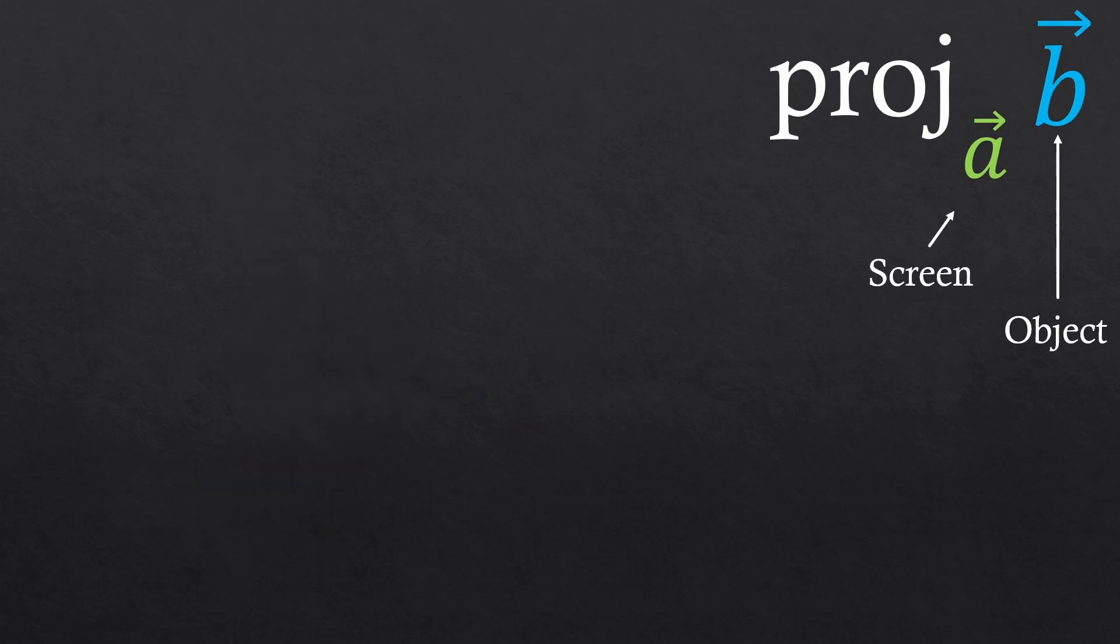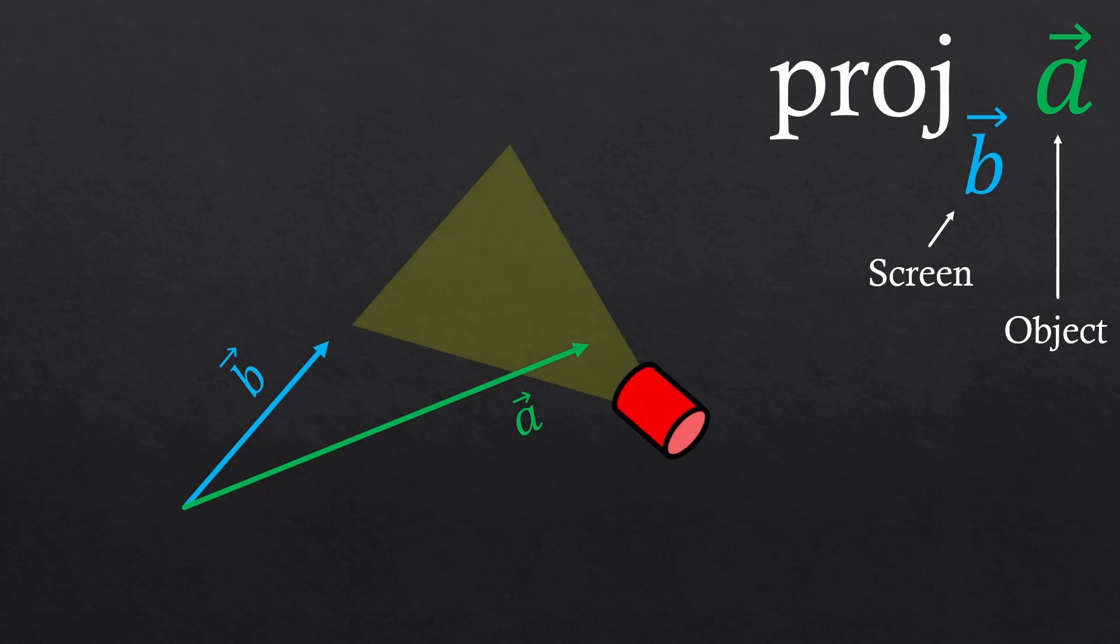This time, we're going to project A onto B. So B is the screen, and A is the object. This shadow of A will look like this, and we express it mathematically like this. So projection of the vector A onto the vector B this time. But wait, the shadow seems to be bigger than the screen. Is that okay? Yes, that's okay,